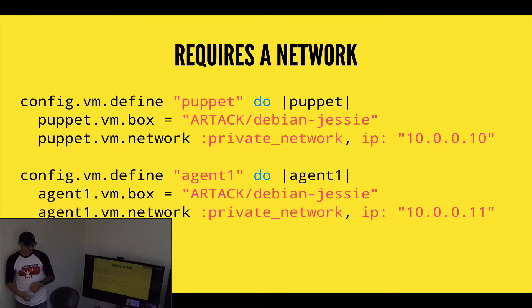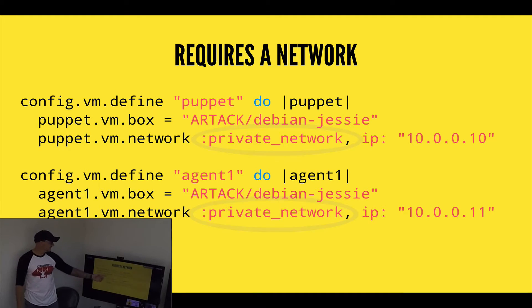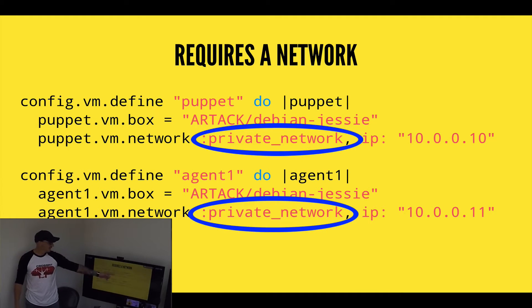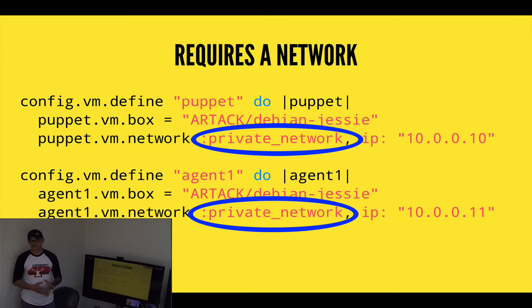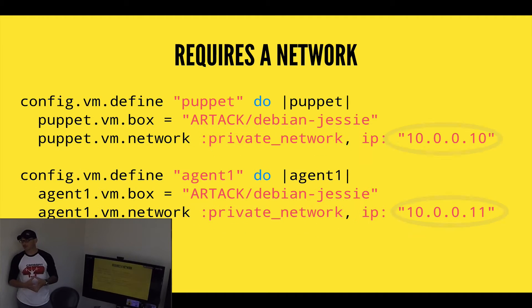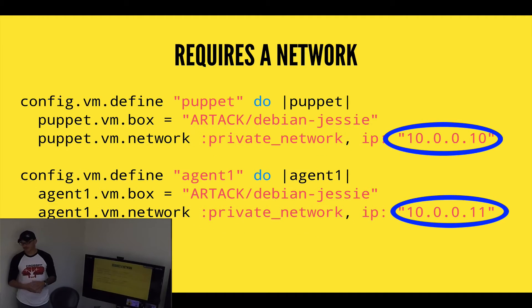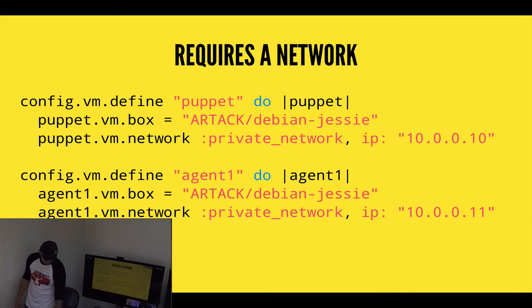In the networking section, we're going to define the network as a private network. For the Puppet Master and the agent, we assign each of those a private IP address, and that's the IP address they're going to use to talk to each other.